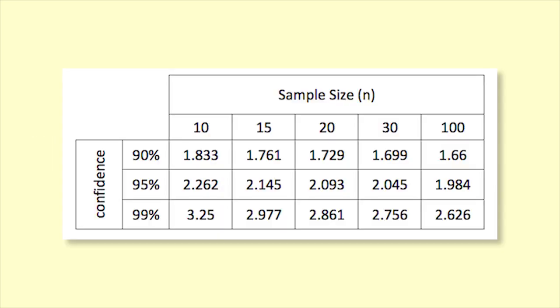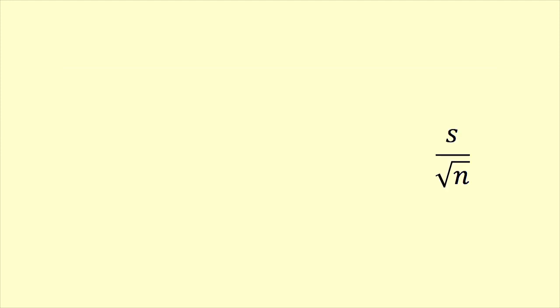Here are some t values for different sample sizes and confidence levels. We multiply the standard error by the t value to get the margin of error. So now we add and subtract the margin of error from the sample mean to find the confidence interval.